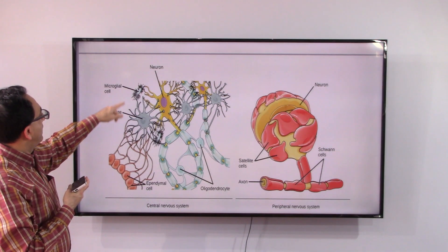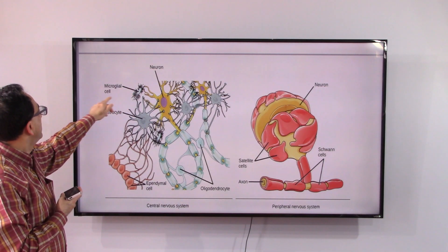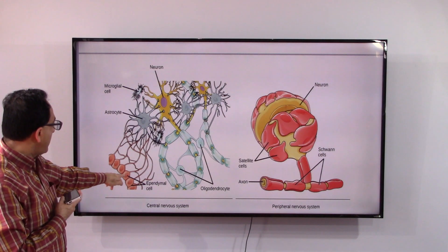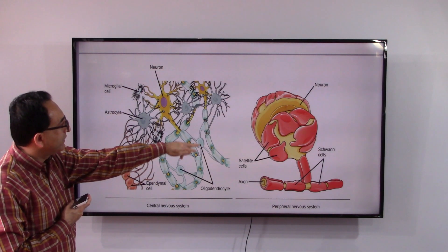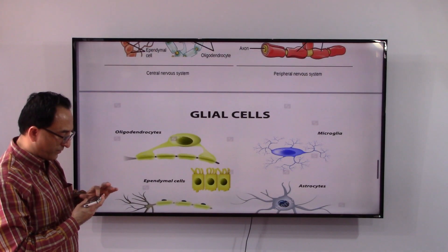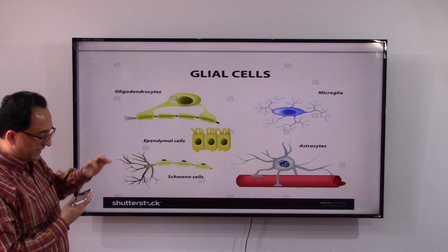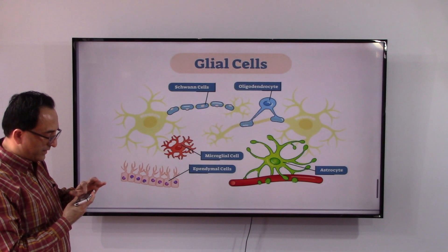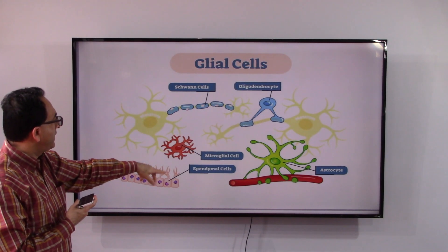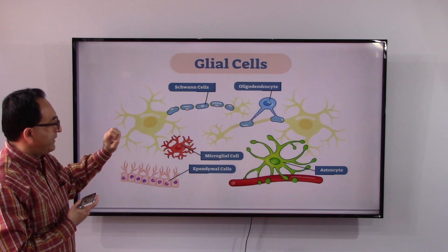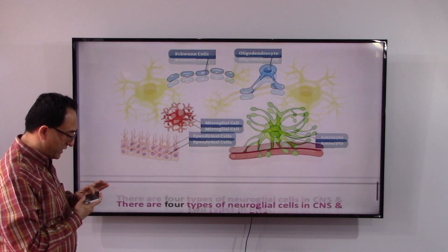When we look under the microscope, we can see the different cell types we have been discussing: neurons, microglial cells, astrocytes, ependymal cells, oligodendrocytes, satellite cells, axons, and Schwann cells — all shown from various views to better understand how they look.